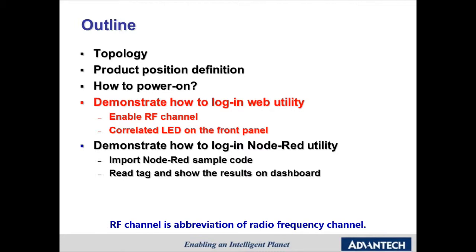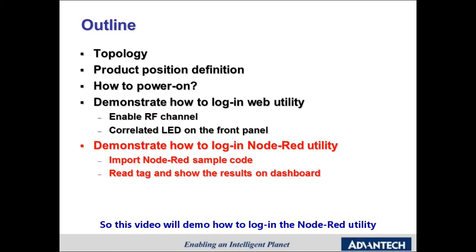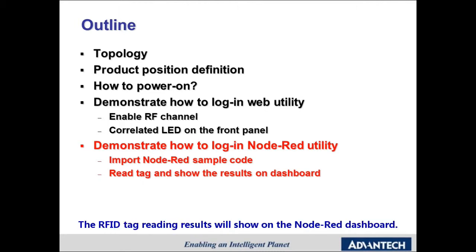RF channel is an abbreviation of radio frequency channel. After enabling the RF channel, you can check the corresponding LED on the front panel. There is some sample code in the Node-RED utility, so this video will demonstrate how to log in to the Node-RED utility and import sample code. The RFID tag reading results will show on the Node-RED dashboard.